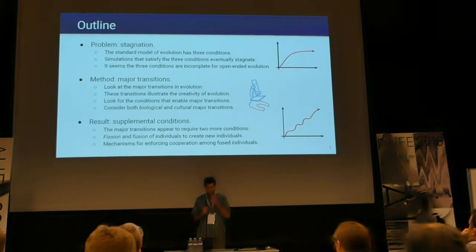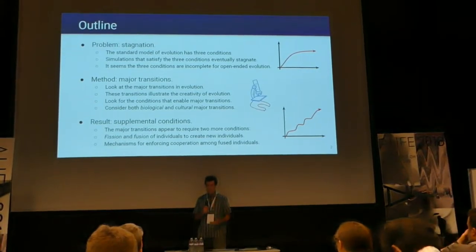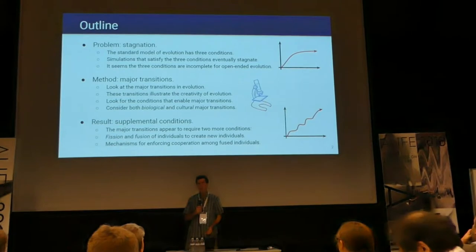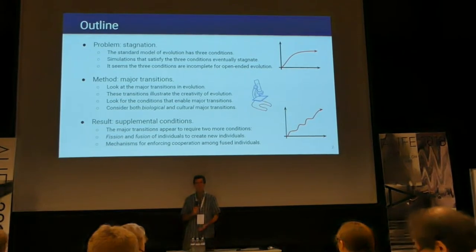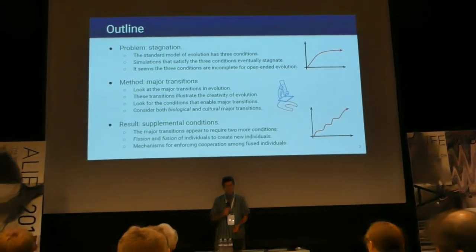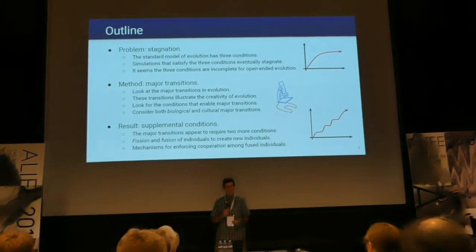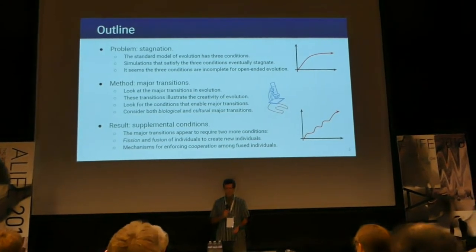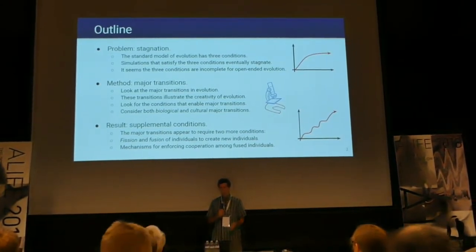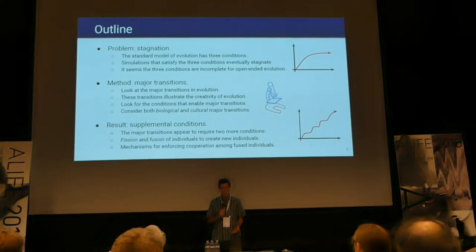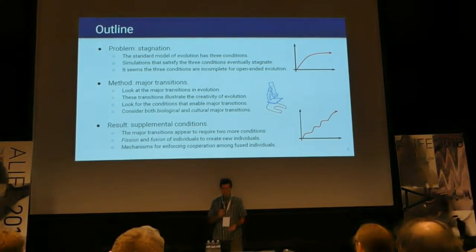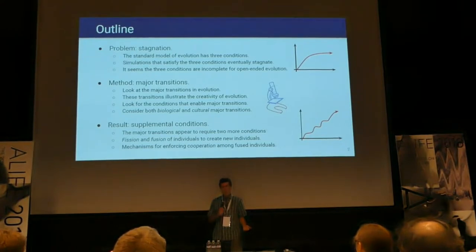The problem is we make these simulations of evolution and we find that they eventually stagnate. There's a standard three conditions for evolution: heredity, variation, and selection. When we implement those in our simulations, it seems that they don't result in open-ended evolution.